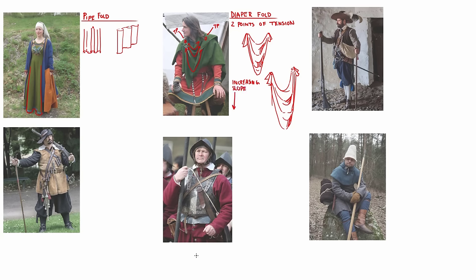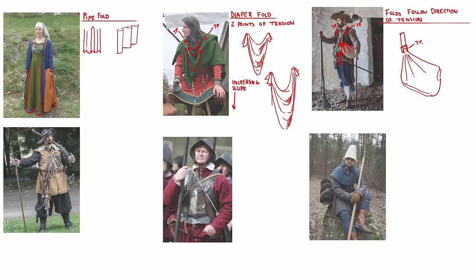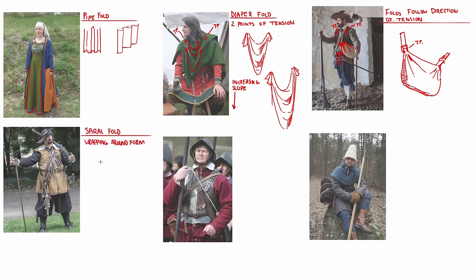A good shorthand to think about is that most folds will lead back to the tension point. The buckle on this man's bag provides an upward force to the left side of the fabric, and tension lines radiate outwards from it. The fabric on this man's outstretched arm is twisted as a result of the rotation in his lower arm — these spiral folds wrap around the cylindrical form of his arm.